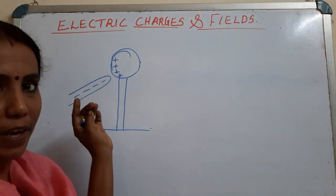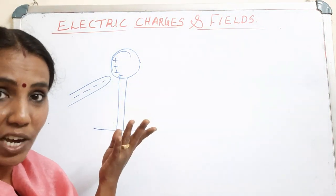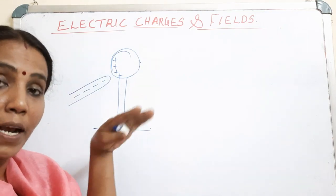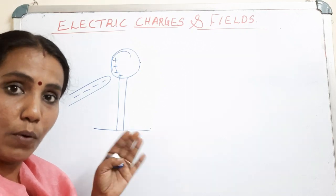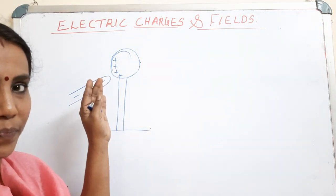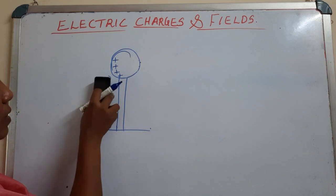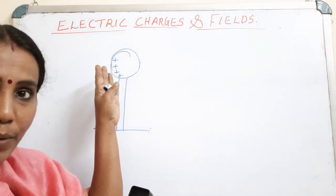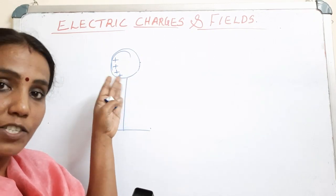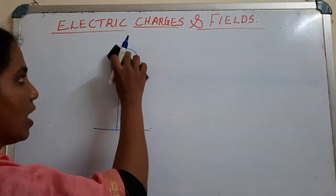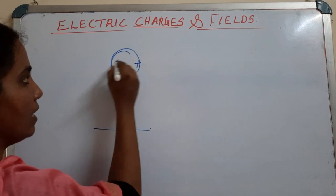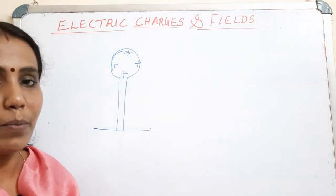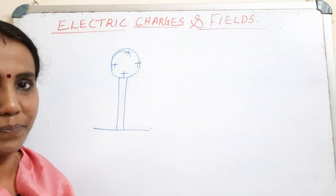So now this metallic sphere is having a net positive charge. Before earthing, its net charge was zero because only a rearrangement was taking place — positive charges on one side, negative charges on the other side, and their sum was zero. But now it is having a net positive charge. Afterwards, we remove the negatively charged body also, and the charges get equally distributed over the surface. This is how we get a uniformly charged sphere by the method of induction.